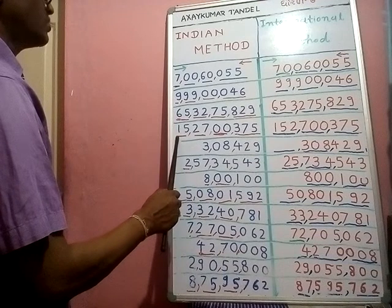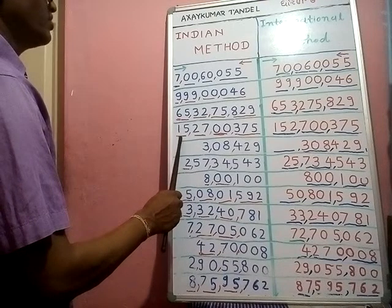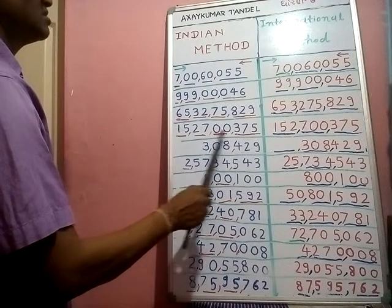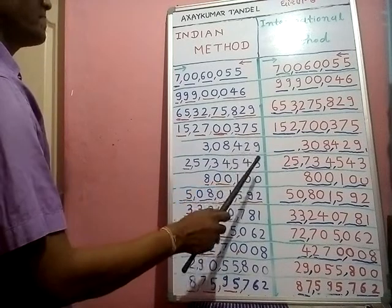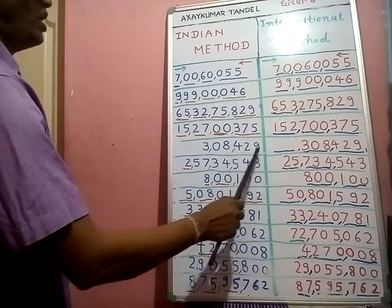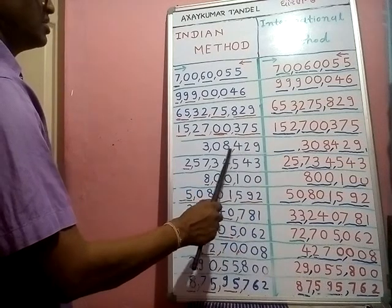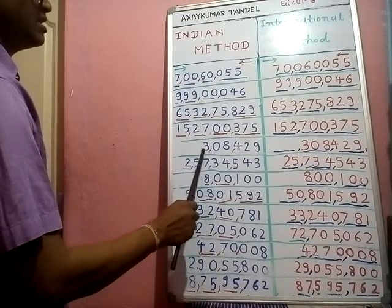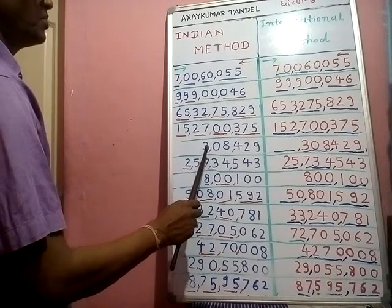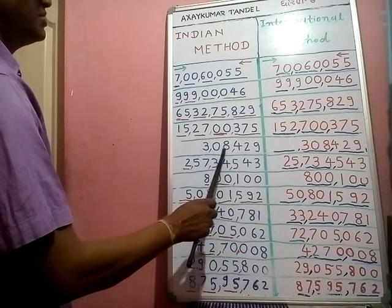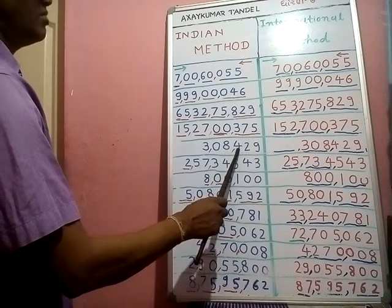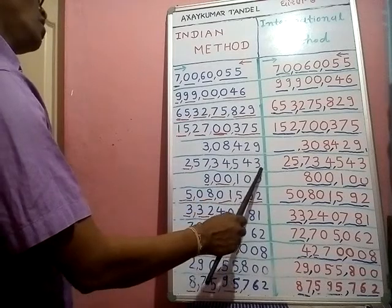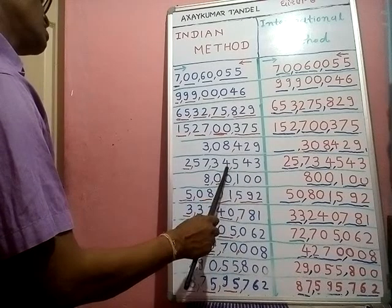We read: fifteen crore twenty-seven lakh three hundred seventy-five. Next one — ones, tens, hundreds, thousands, ten thousands, lakhs, ten lakhs, crores. We read: eight lakh four thousand four hundred twenty.